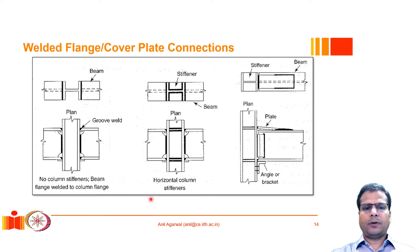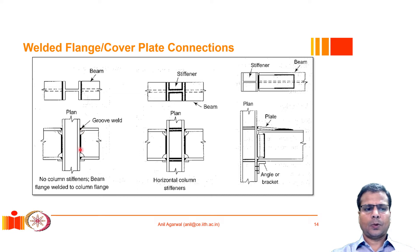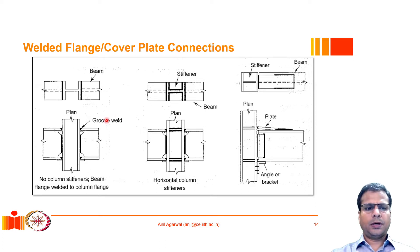In this lecture, we will discuss another variety of rigid connections which involves welding the beam flange directly to the column. These are typically known as welded flange or cover plate type of connections. Here some examples of such connections are shown, which I will elaborate on.